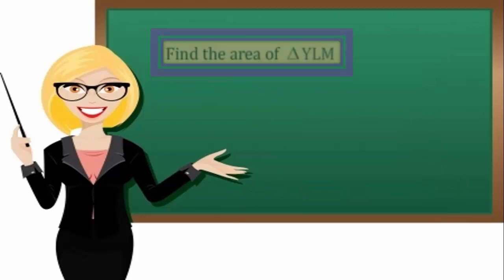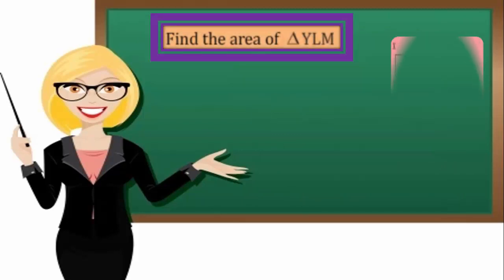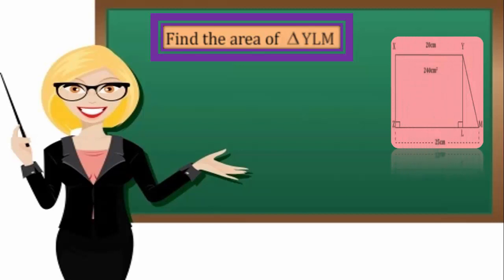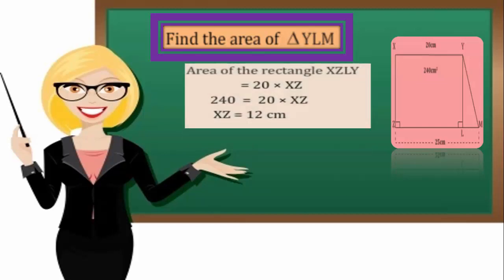In the shown figure, find the area of the triangle YLM. Solution: Area of the rectangle XZLY equals 20 times XZ. 240 equals 20 times XZ. Then, XZ equals 12 centimeter.